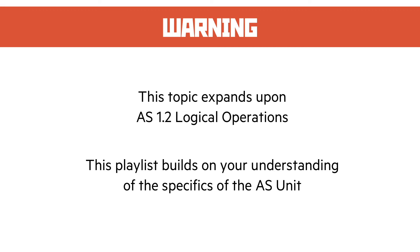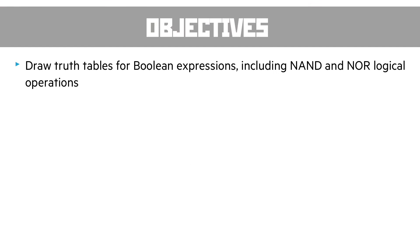The first objective for this unit is to draw truth tables for Boolean expressions. Now we've done that before in the AS. All of the Boolean expressions that we've learned about you should be able to do already, but the two new ones that we need to include are NAND and NOR gates.